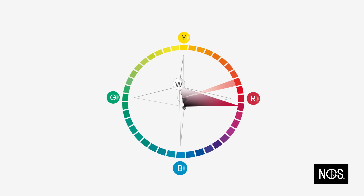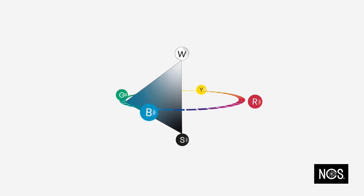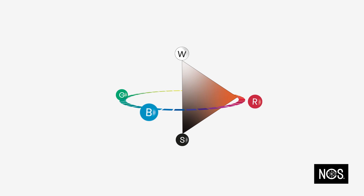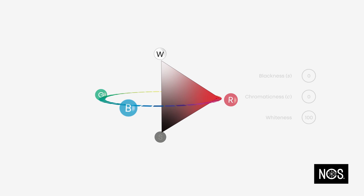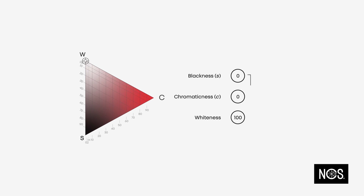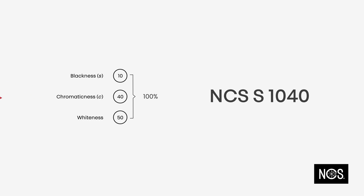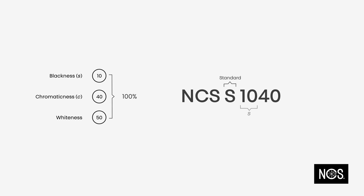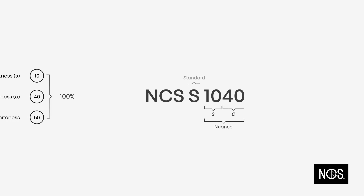For each hue in the NCS color circle, you have an NCS color triangle that describes the nuance — the relation between white, black, and the most chromatic point of the selected hue. The sum of the nuance is always 100%. In the case of our flamingo, it has 10% blackness, 40% chromaticness, and 50% whiteness. However, the NCS notation only defines the blackness and the chromaticness: 1040. The whiteness, 50, is understood from having a 100% nuance.